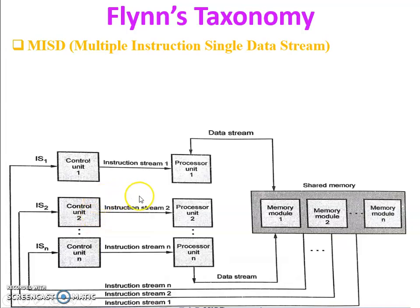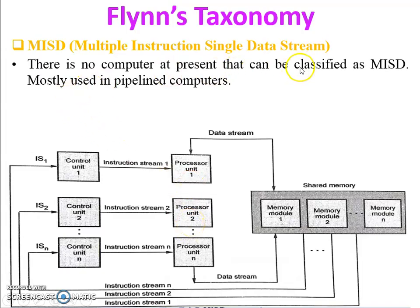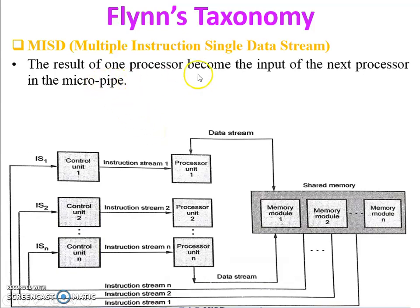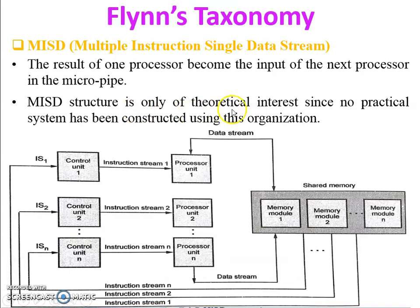The instruction is different but the data is the same for all processor units. In the diagram, the output of processor one is given as input to processor two, then the output of processor two is given to processor three, up to N — this is a pipelining process. There is no computer at present that can be classified as MISD. It is mostly used in pipeline computers, where input/output is passed to the next unit. Each processor receives distinct instructions operating over the same data stream. MISD structure is only of theoretical interest; no practical system has been constructed using this organization.